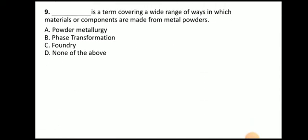Next question: Blank is a term covering a wide range of ways in which the material or component are made from metal powder. The answer is powder metallurgy. So powder metallurgy is a term covering a wide range of ways in which materials or components are made from powders — we are manufacturing the products of metal from the powder.